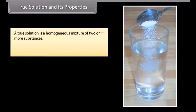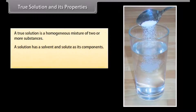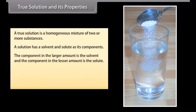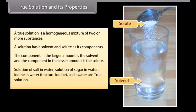True solution and its properties. A true solution is a homogeneous mixture of two or more substances. A solution has a solvent and solute as its components. The component in the larger amount is the solvent and the component in the lesser amount is the solute. Examples include solution of salt in water, solution of sugar in water, iodine in water (tincture iodine), and soda water.